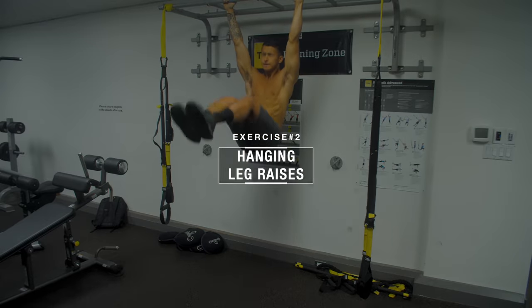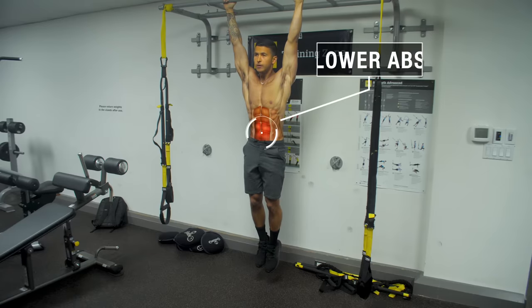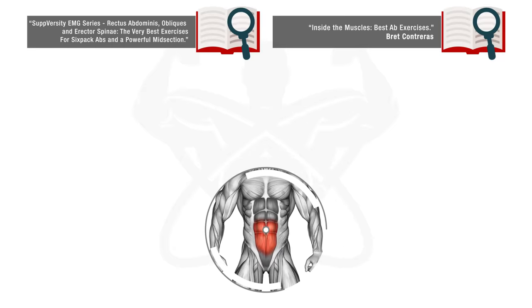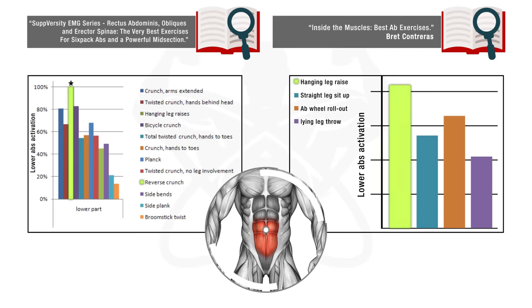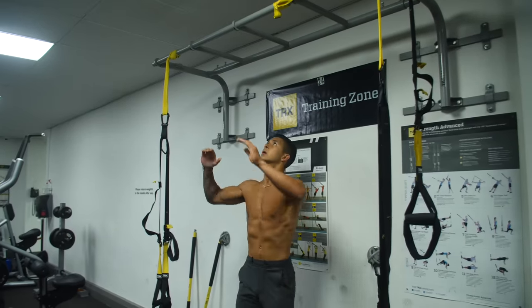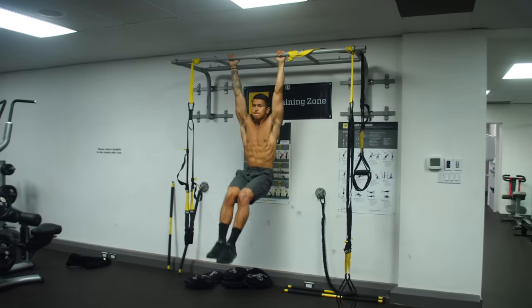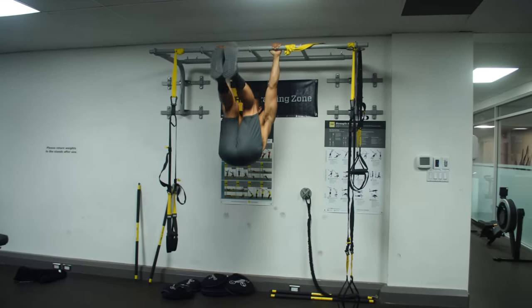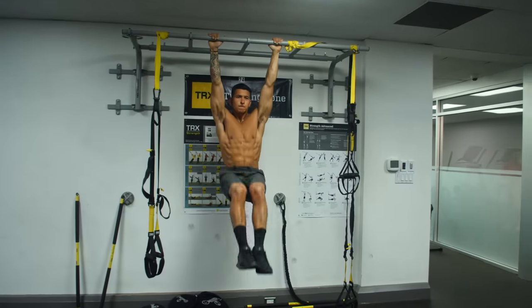Next, we're going to move on to the hanging leg raise, which is another bottom-up ab movement that's going to effectively hit the lower abs as a result. This exercise was shown in two separate EMG analyses to elicit the highest lower abs activation when compared to several other abs exercises. However, just like with the reverse crunch, its effectiveness on lower ab activation is highly dependent on how you perform it, as this can again very easily become a hip flexor dominant movement when done incorrectly.